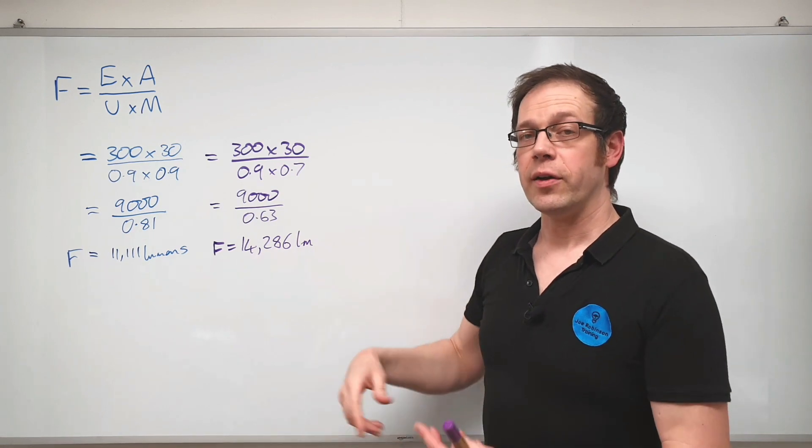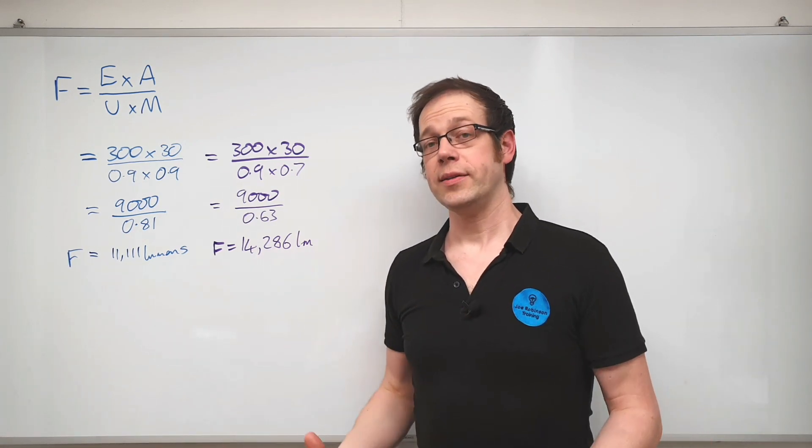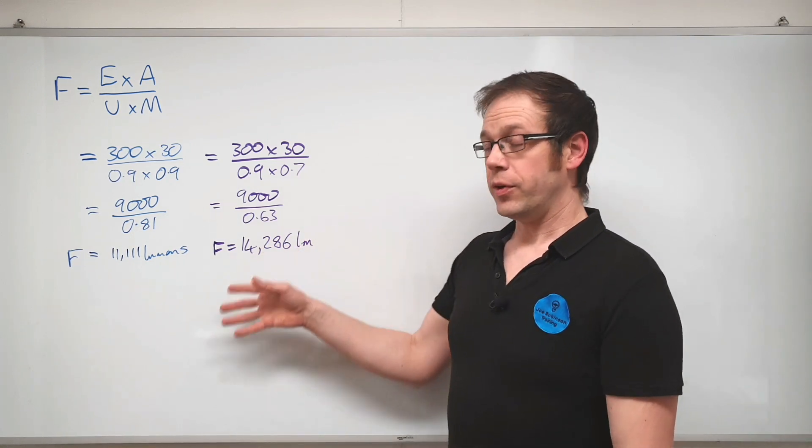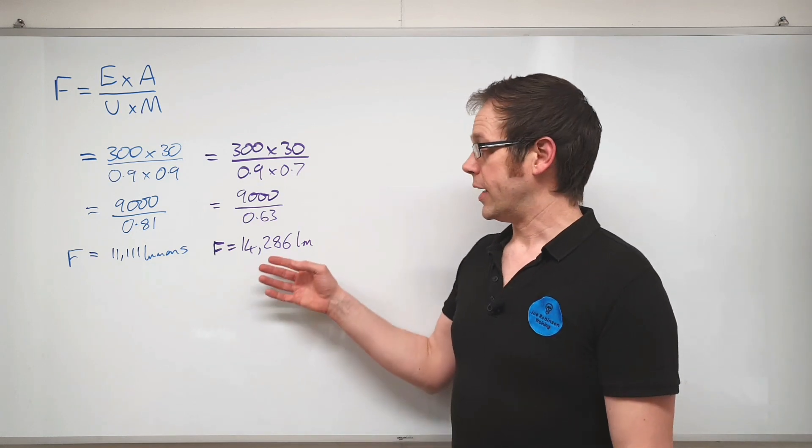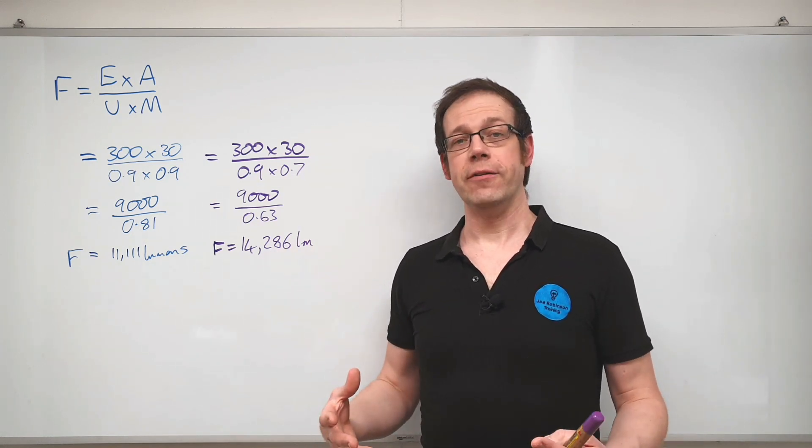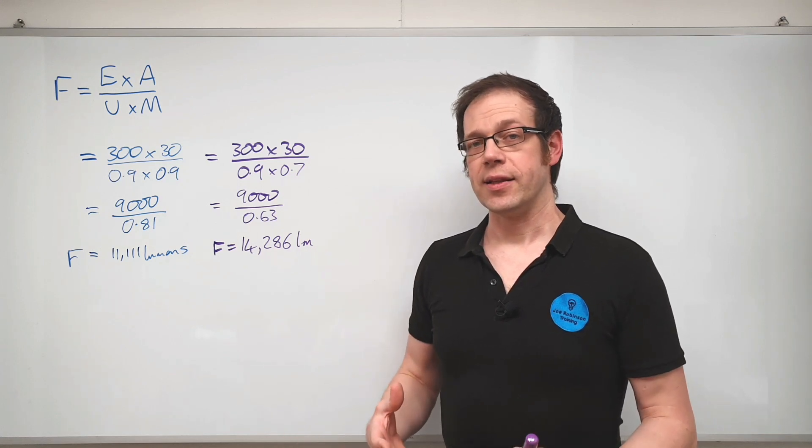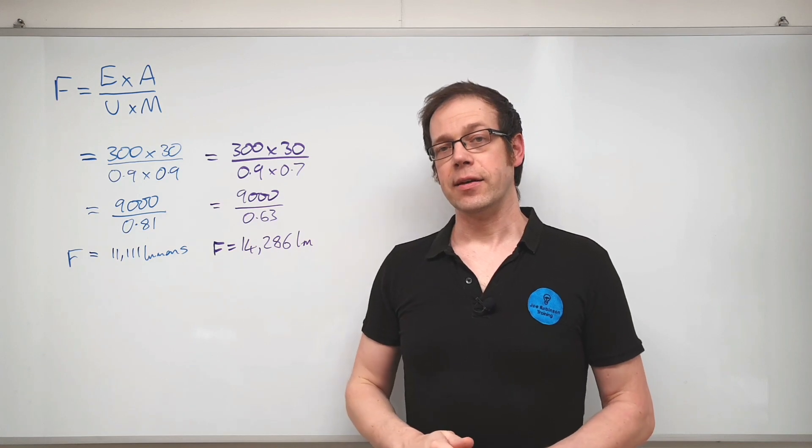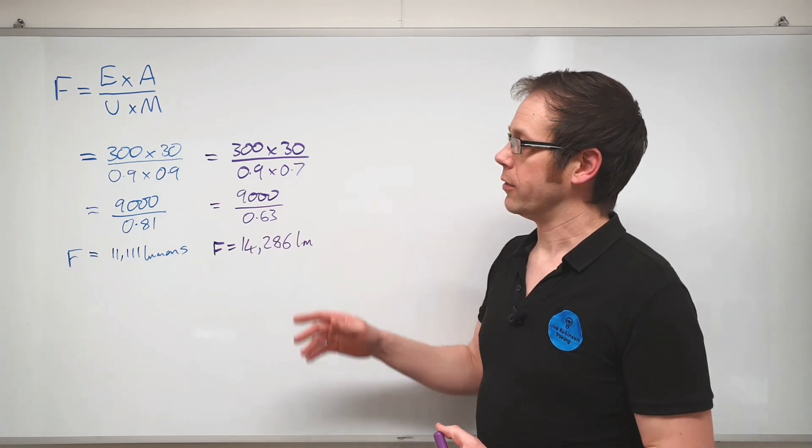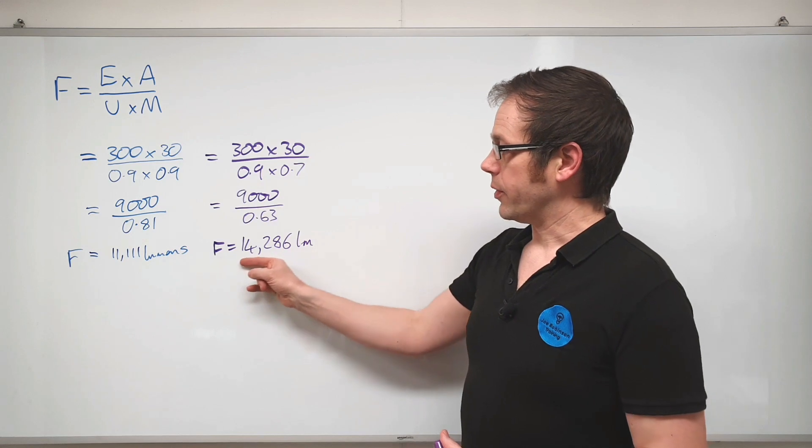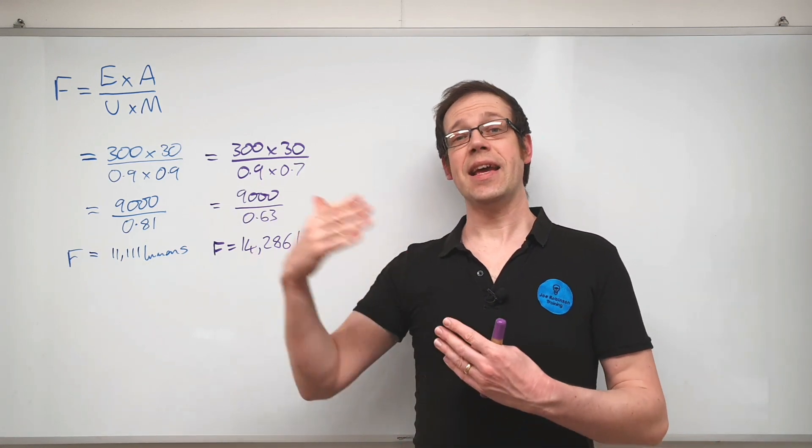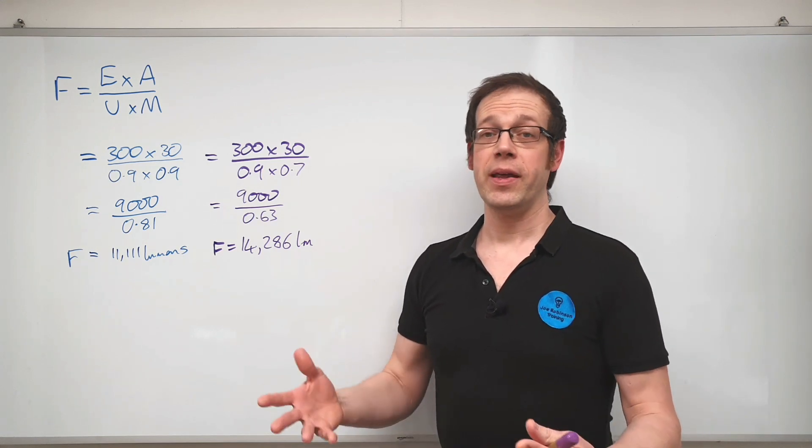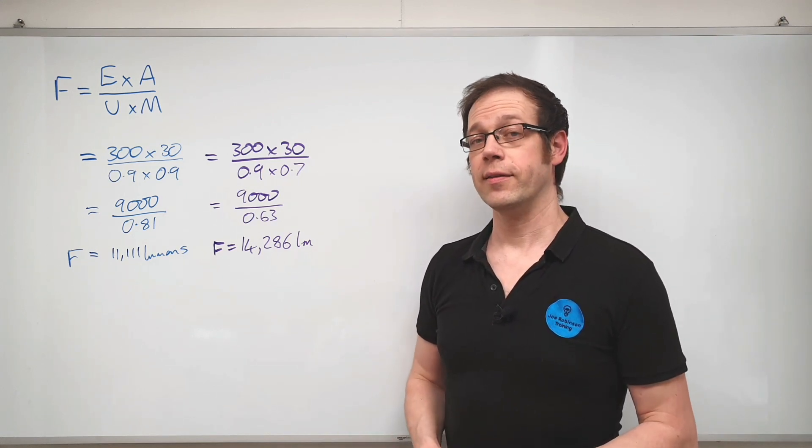So we either need to install light fittings that give off more light or we probably need to install more light fittings. Now what we're going to do in a future video is we're going to have a look at how we then use this number to figure out the amount of lights that we need for a space and how we can answer that all important exam question. This is a typical question that we might get inside an exam for our City and Guilds or our EAL qualification. Ultimately we're trying to figure out the amount of luminous flux required, and then the next step, which we'll cover in a future video, is figuring out just how many lights are required.